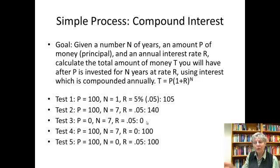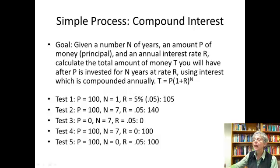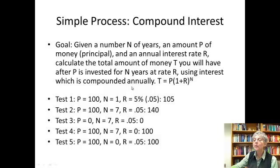Here's the formula. If I start with n as the number of years, p as the amount of money, and r as the interest rate, I want to calculate the total money t that I have after my principal is invested for n years at rate r. The formula for compound interest is t equals p times (1 plus r) to the power n. This goal is like my orientation phase — I've figured out exactly what I want to do.